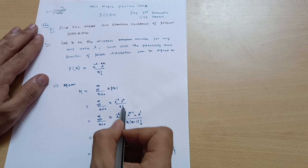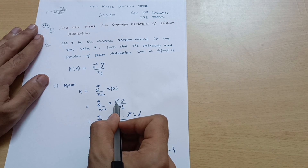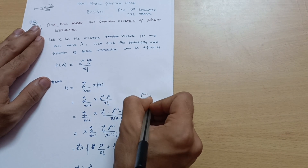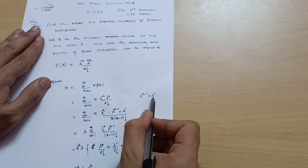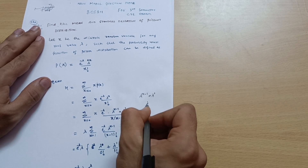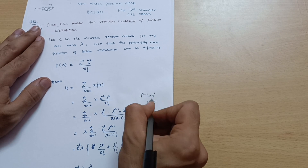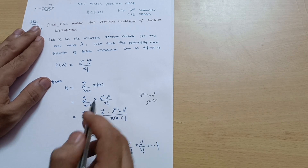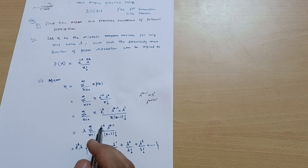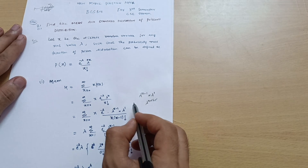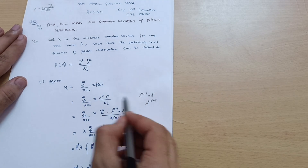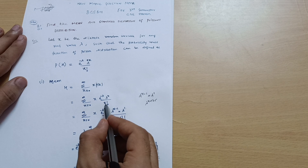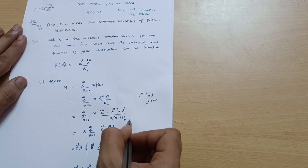Now I expand the term. I can write λ^x as λ^(x−1) · λ^1, since bases are the same and powers are added: (x−1) + 1 = x. Also, I expand x! as x · (x−1)!. So the expression becomes: Σ (x=0 to ∞) x · e^(−λ) · λ^(x−1) · λ / (x · (x−1)!).